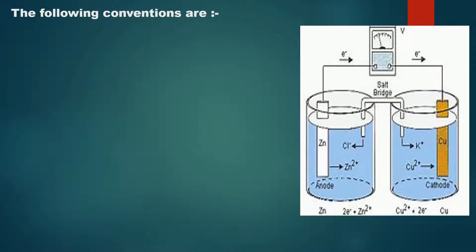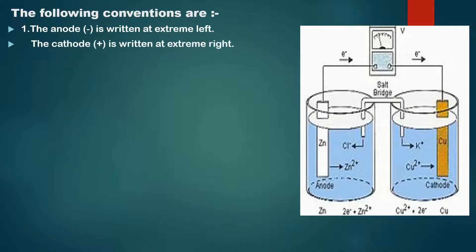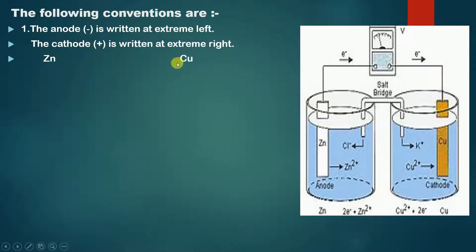For writing the formulation of cells there are certain conventions which we need to follow. The first convention states that the anode is written at the extreme left and the cathode is written at the extreme right. In this example, Zn is acting as our anode and copper is acting as our cathode. So Zn needs to be written on the extreme left and copper, being the cathode, needs to be written on the extreme right. What is written in between Zn and Cu we will understand ahead.